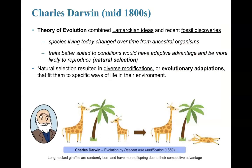Now enter Charles Darwin — the father of evolution — working in the mid-1800s. He combined Lamarckian ideas about the refining of traits as well as recent fossil discoveries to develop the theory of evolution. Basically, he proposed that species living today changed over time from ancestors that resembled them in some way, and they changed over time.